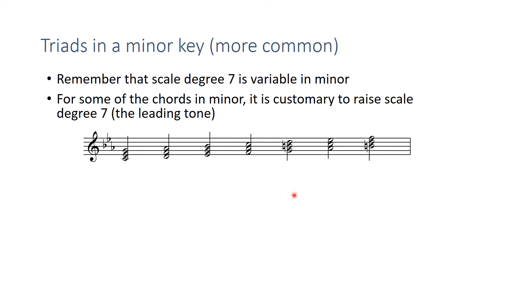So scale degree seven in this, here's one, two, three, four, five, six, seven, that's the B, B natural, is raised from B flat. That's my leading tone in C minor. Notice that I've raised that twice. I've raised it in the five chord here to make that into a major triad, and I've raised it in the seven chord to make that a diminished triad.